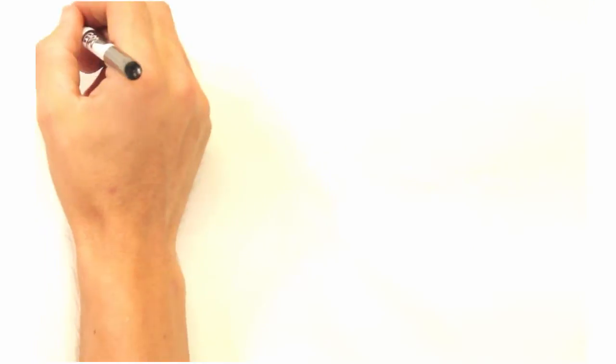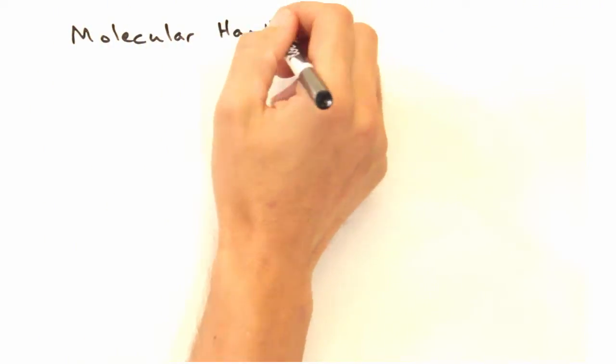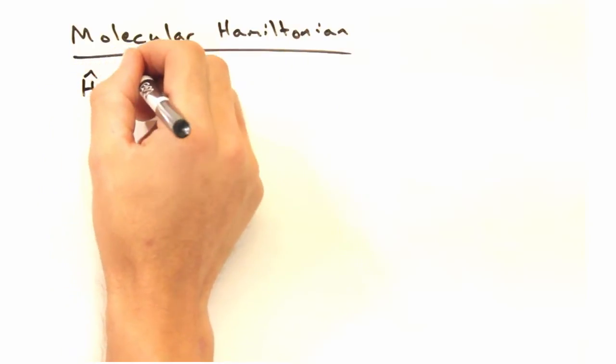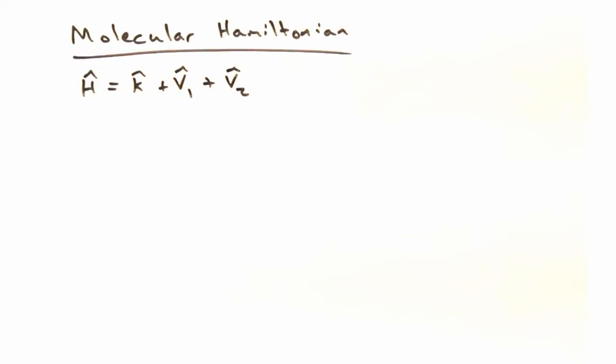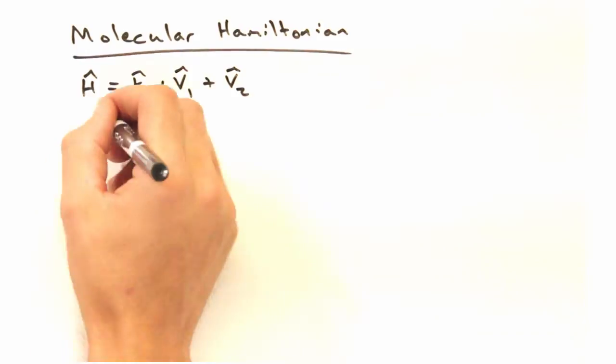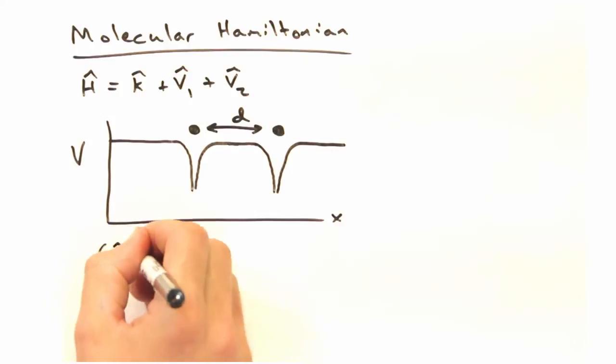Nor have we said anything about the new Hamiltonian H that describes the molecular system. We could take a guess of the Hamiltonian. We've still got the kinetic term, but now we've got a second potential term. And together, the potential should look like this. And the time independent Schrodinger equation should look like this.